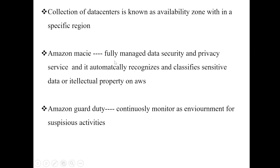Amazon Macie is an important service. It is a fully managed data security and privacy service that automatically recognizes and classifies sensitive data or intellectual property on AWS. Whenever you see a question related to data security and privacy, you have to remember this service.